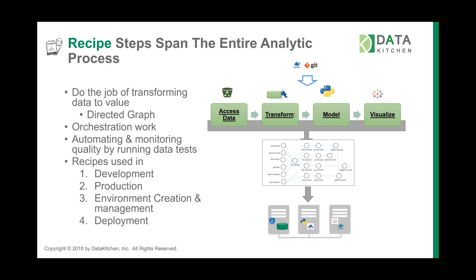Those graphs can be used for different things. One is to do the actual production work. Another is just for development — you may want to take part of a graph or one node and change it. Third, you can use these graphs to help create environments: we have node types that start and shut down servers. Fourth, you can create graphs that generate deployment packages — say you want to add one table to a running system. So recipes have a bunch of different duties associated with them.